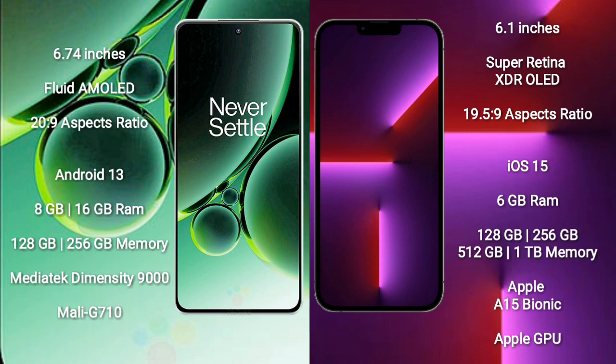OnePlus Nord 3 comes with 8GB or 16GB RAM, and 128GB or 256GB internal storage. It is powered by the MediaTek Dimensity 9000 processor and Mali-G710 GPU.